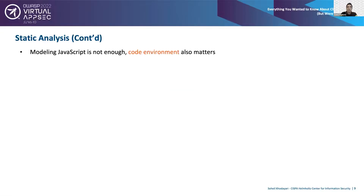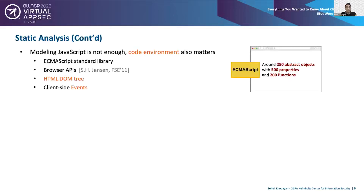For client-side JavaScript, the problem is aggravated because modeling JavaScript code alone is not enough — the execution environment also matters. The client-side code runs in a rich browser-based environment containing the ECMAScript standard library with around 250 abstract objects, 500 properties, and 200 functions, plus different built-in native browser APIs. We also have the HTML DOM tree and JavaScript's interaction with it, and non-deterministic execution of client-side events.